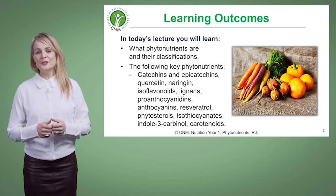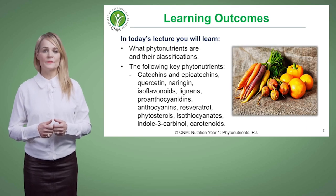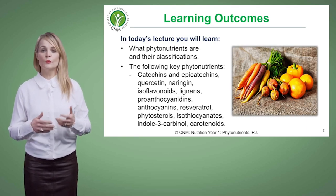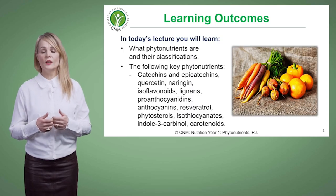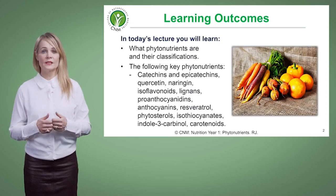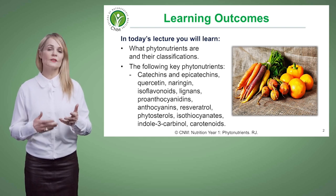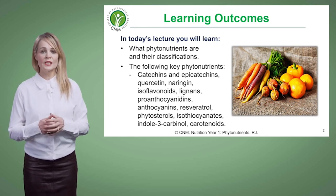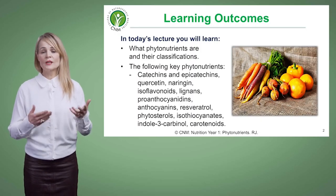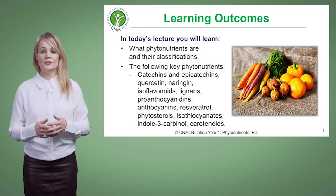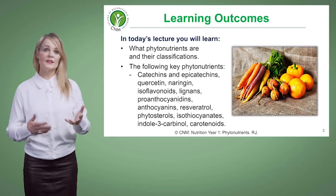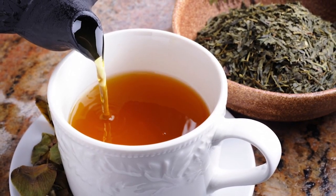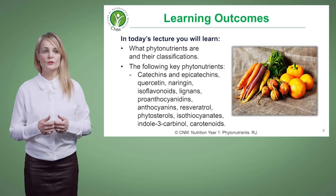Let's start off by looking at the learning outcomes. During the course of this lecture I'm going to take you through what phytonutrients are and how they're classified. You'll also learn lots of new key names and key terms, which we've detailed here on the slide — for example, catechins and epicatechins, which we find in things like green tea, and I'll teach you how they're found in plants and how they're produced.